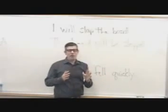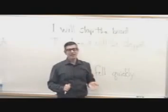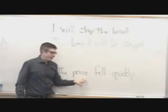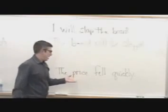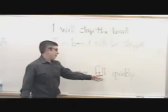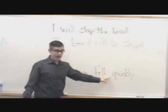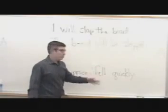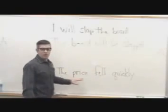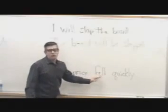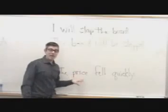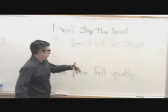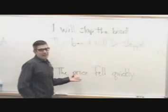All verbs can be expressed in the active voice, but not all verbs can be expressed in the passive voice. For example, take the sentence: 'The price fell quickly.' We already know it's active because the verb in the passive voice can never be just one word long — it must be at least two, one of which would have to be a form of 'to be.' 'Fell' is one word. What fell? The price. And what did the falling? Again, the price. So the subject and the agent are the same — active voice. But if we tried to rewrite this in the passive, we get into trouble.